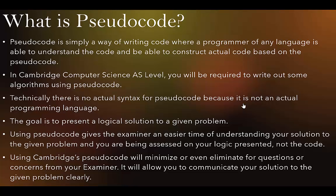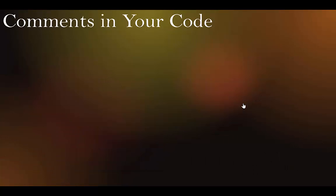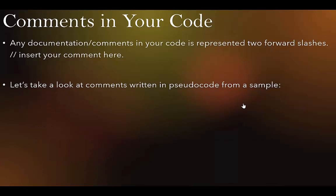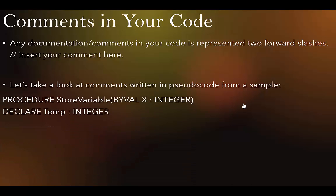This allows your examiner not to wonder, 'Did they mean to have this here?' They're not interested in giving you the benefit of the doubt very often, so you want to make sure your code is clear and does what it's supposed to do. So let's start with comments in your code. Any documentation or comments in your code is represented by two forward slashes.